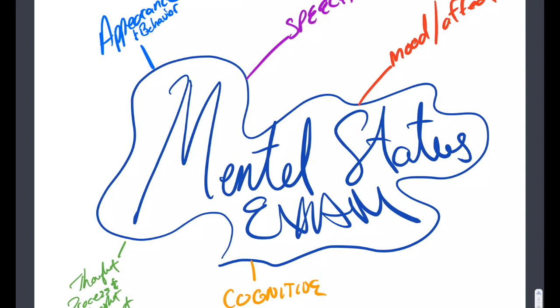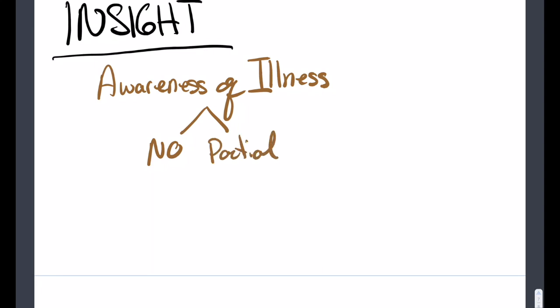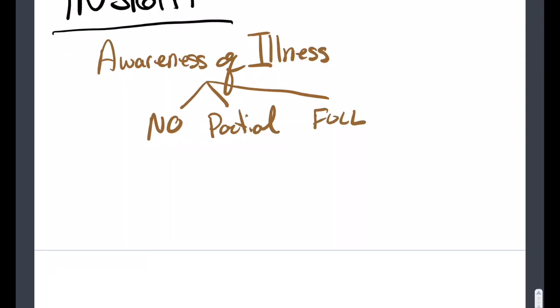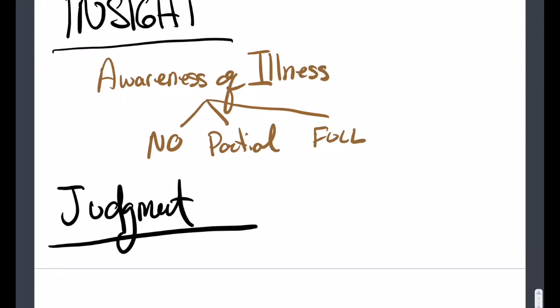And finally, we have insight and judgment. Insight deals with whether or not the patient is aware of their own illness. You can describe it as no insight. Someone has absolutely no idea. They could have partial insight, or they got full insight, which is what you would consider as average. There's also judgment. Judgment is basically, does the patient understand the consequences of their actions? Whether the consequence is a good or a bad thing? Do they understand or are they able to judge what would happen if they took a certain action?